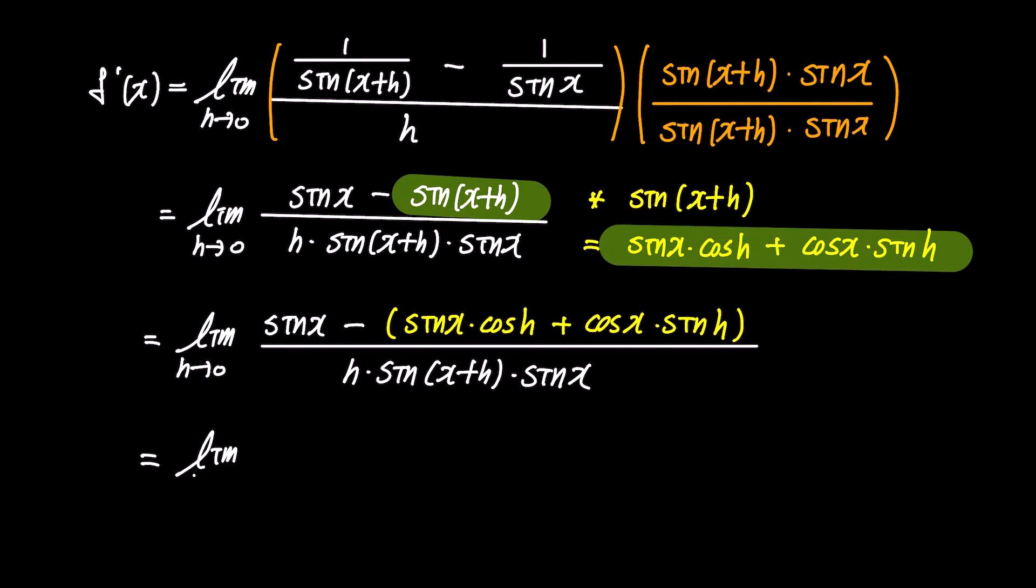Removing the parentheses in the numerator, the expression becomes the limit of sin x minus sin x times cos h minus cos x times sin h, over h times sin x plus h times sin x.